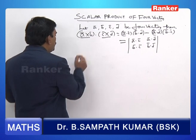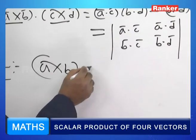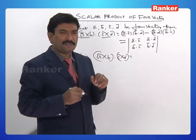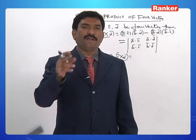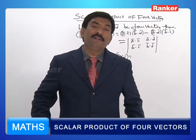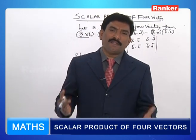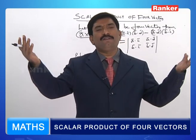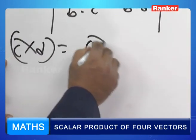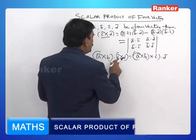So therefore, let us see how we are going to prove this. Now A cross B dot of C cross D. As we know already in the scalar triple product, dot and cross are interchangeable in a cyclic order — meaning vectors can be interchanged in a cyclic order. So I can write A cross B, cross C bar, dot D bar.